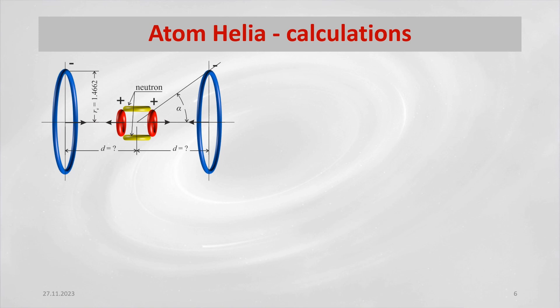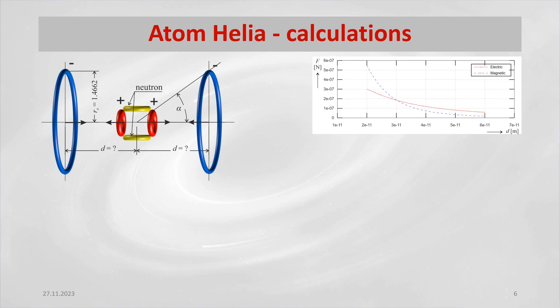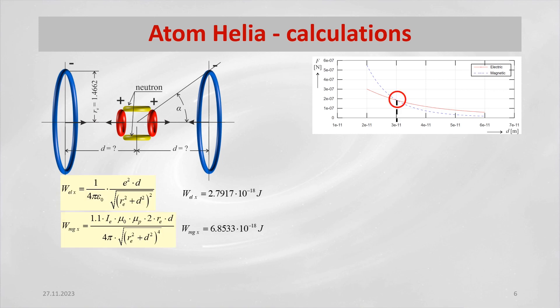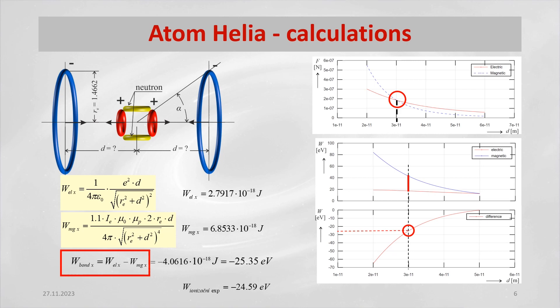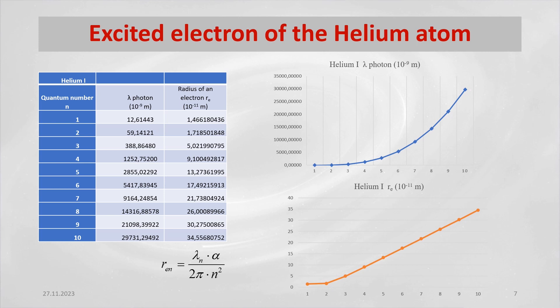The equations for the calculation of electric and magnetic energy in the x-axis are derived from the equations for the calculation of electromagnetic forces. The value of bond energy is calculated as the difference between electric energy and magnetic energy. The quantified value of 25.35 electron volts corresponds to the experimentally measured value. The table shows the wavelengths of photons according to the spectra database when electrons are excited from the n level to the n+1 level. From these wavelengths of photons, the radii of the electrons are calculated when the electrons are excited always one level higher. While photon lengths grow exponentially, electron radii grow linearly.